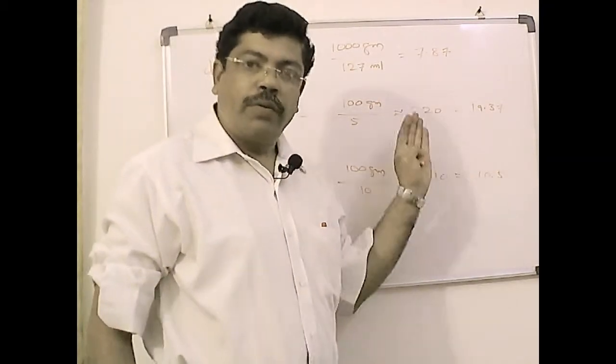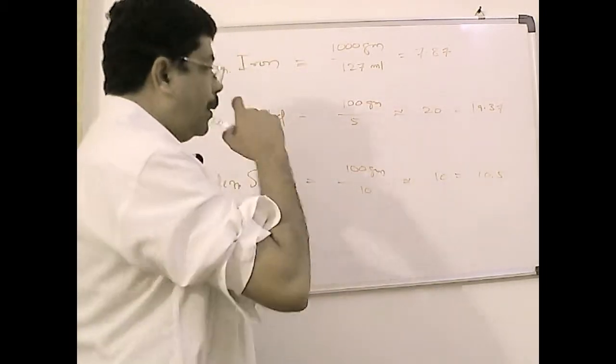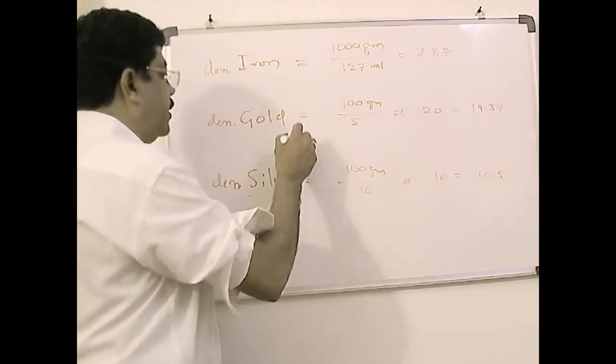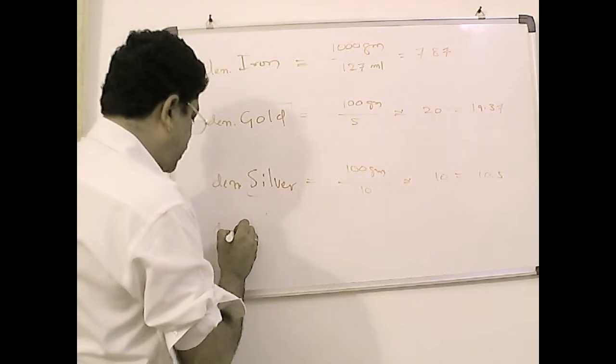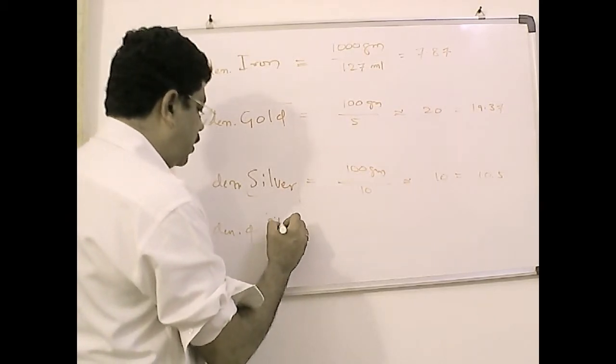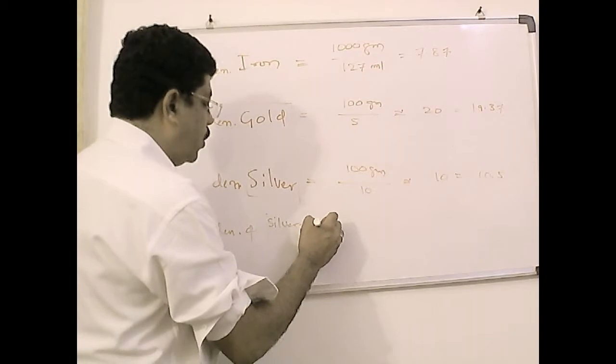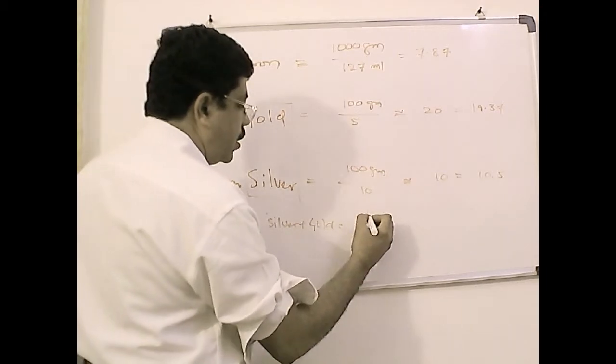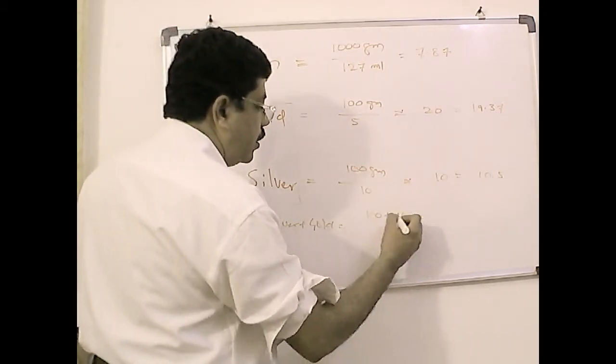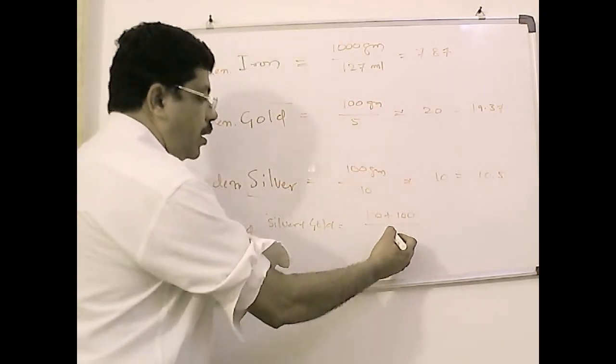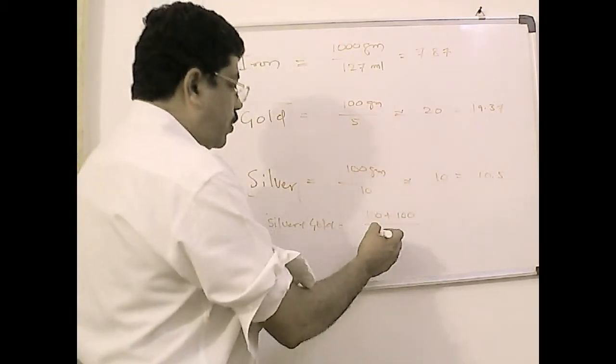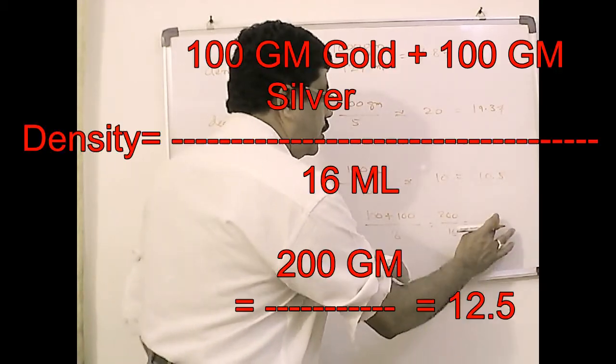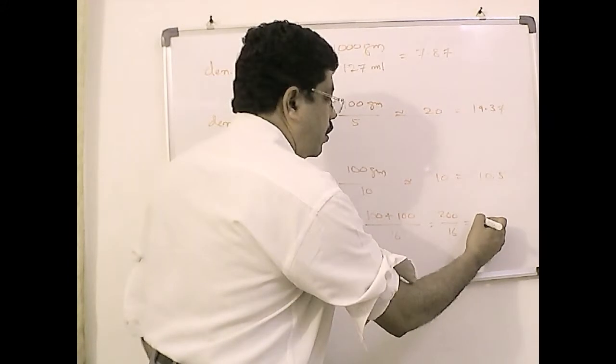Now what argument is that, if the gold taken is pure, then the water displacement should be equal to the way we have shown here. Now if the gold and silver is mixed, then we should get a different value here. Let us take 100 grams of gold and 100 grams of silver and then it is water, let us say displaced water is around 16 ml. Then the density works out to be around 12.5.